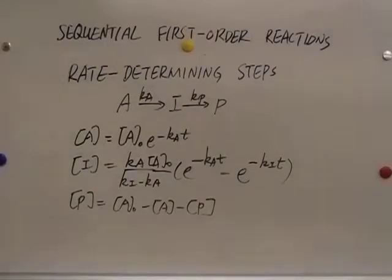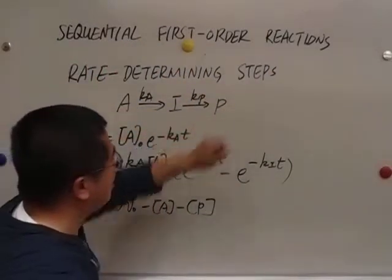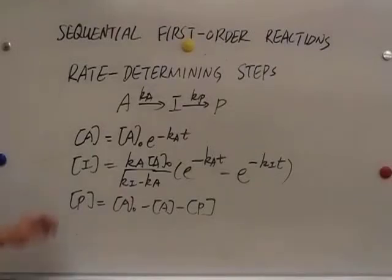In another video we derived sequential first order reactions from A to I and then to P, and we got the expressions of the concentrations of A, I, and P.